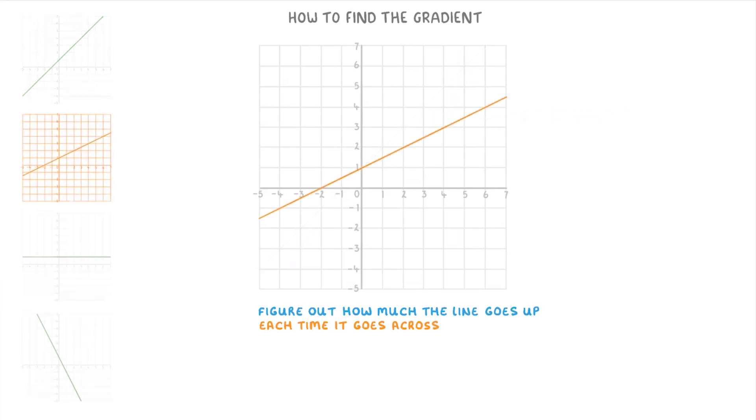If we look at our next line though and do the same thing, this time for every one that it goes across it only goes up by 0.5. And so the gradient of this line is only 0.5 which means it's less steep than our last line.